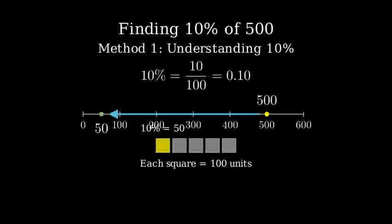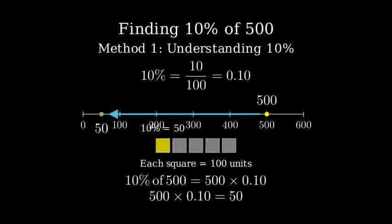Now let's solve this mathematically. To find 10% of 500, we multiply 500 by 0.10. 500 times 0.10 equals 50.